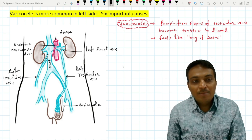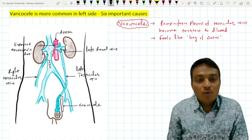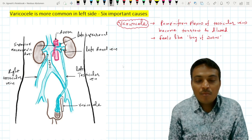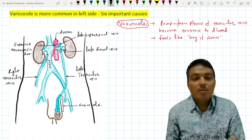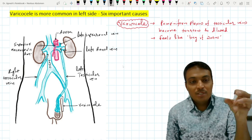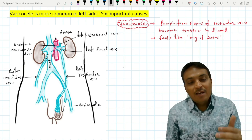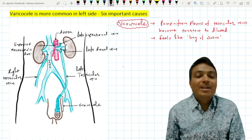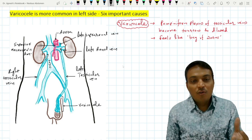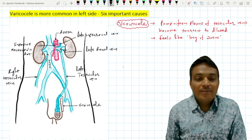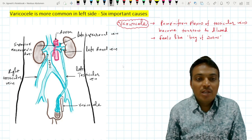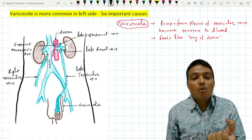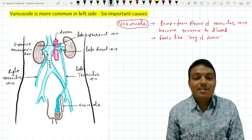The sixth reason is that the left renal vein also receives drainage from the left suprarenal vein, which drains blood from the left suprarenal gland directly into the left renal vein. Since the suprarenal gland secretes adrenaline, this adrenaline-rich blood from the left suprarenal vein pours into the left renal vein, leading to a greater spasmodic effect and more spasm of the left renal vein. Ultimately, this increases backflow of blood into the left testicular vein.